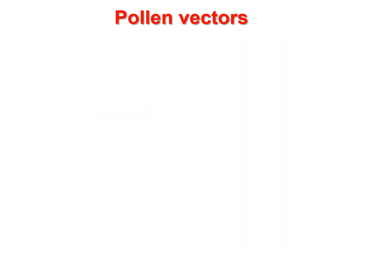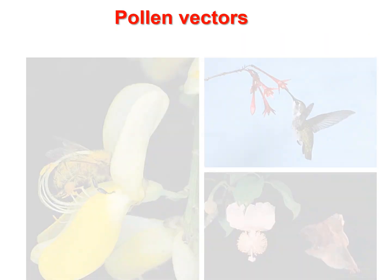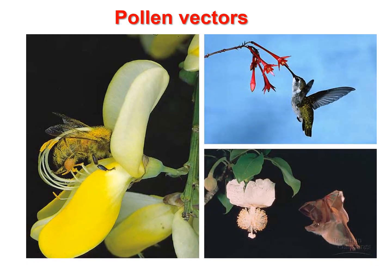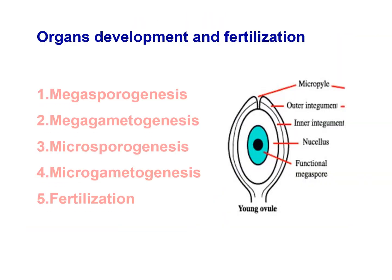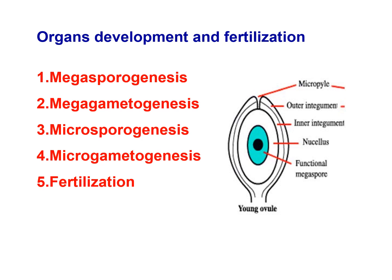The sequence of organ development and fertilization in angiosperms includes: megasporogenesis, megagametogenesis, microsporogenesis, microgametogenesis, and fertilization.